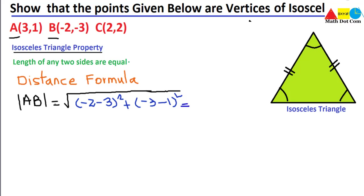Solving it: −2 − 3 = −5, and (−5)² = 25; plus −3 − 1 = −4, and (−4)² = 16. So AB = √(25 + 16) = √41.